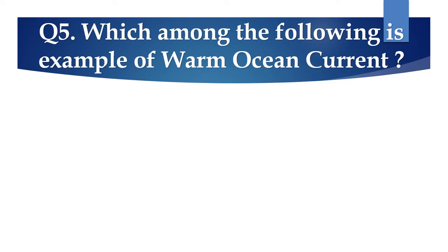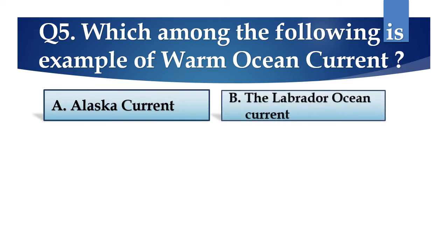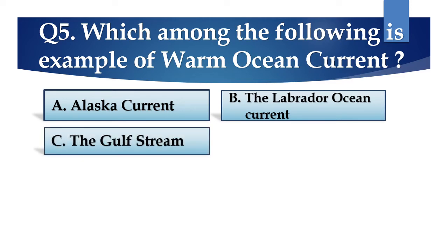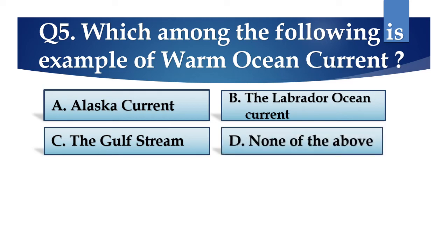Question number 5: Which among the following is an example of warm ocean current? The options are: A. Alaska current, B. The Labrador Ocean current, C. The Gulf Stream, or D. None of the above.